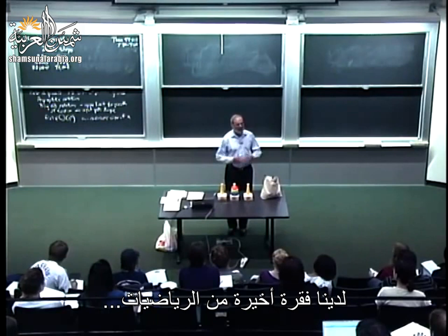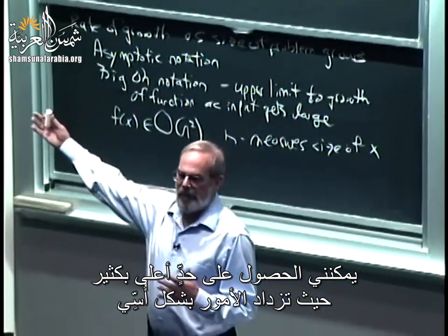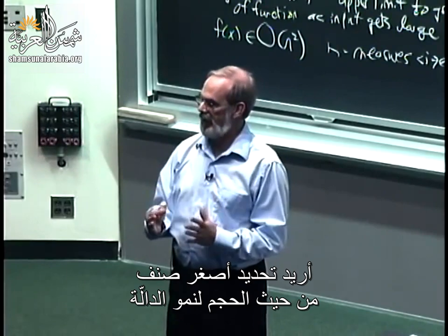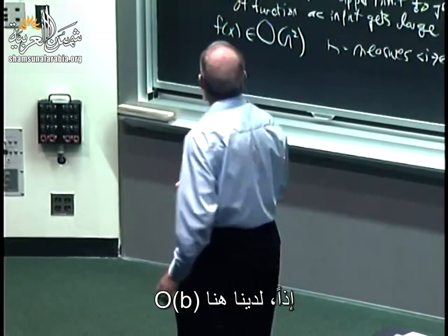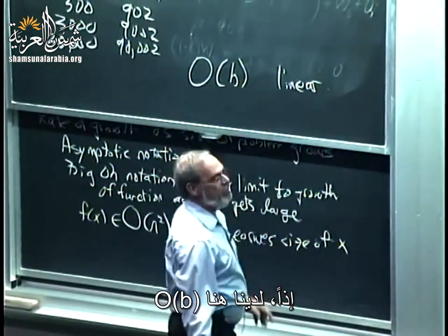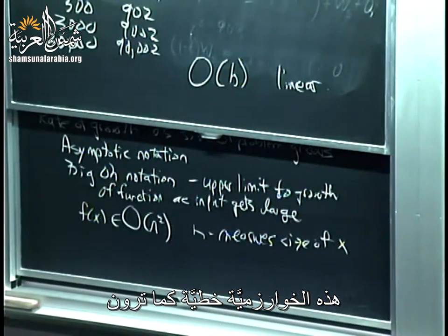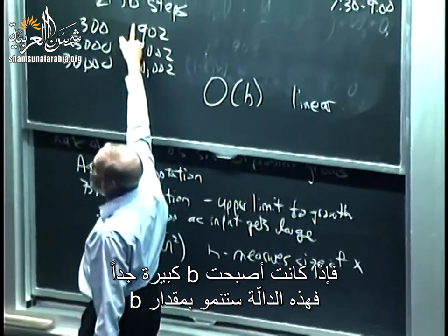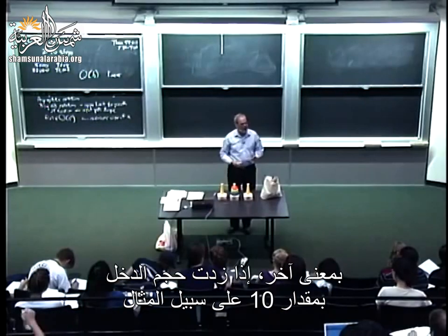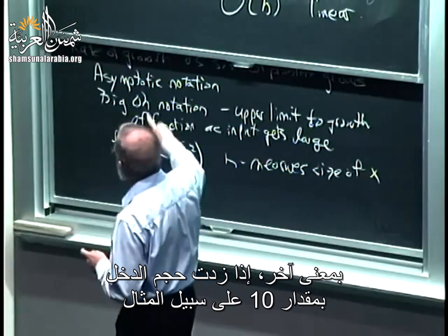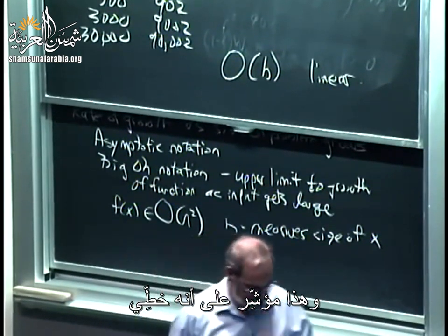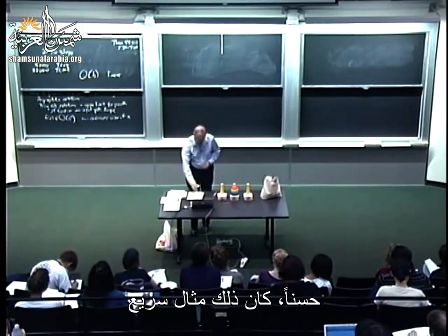For the iterative exponentiation example, this would be order b — it's linear. You can see it: the product was 2 plus 3b. As I make b really large, this thing grows as b. The 3 doesn't matter — it's just a constant. It's growing linearly. Another way of saying it is, if I increase the size of the input by 10, the amount of time increases by 10. That's a sign that it's linear.